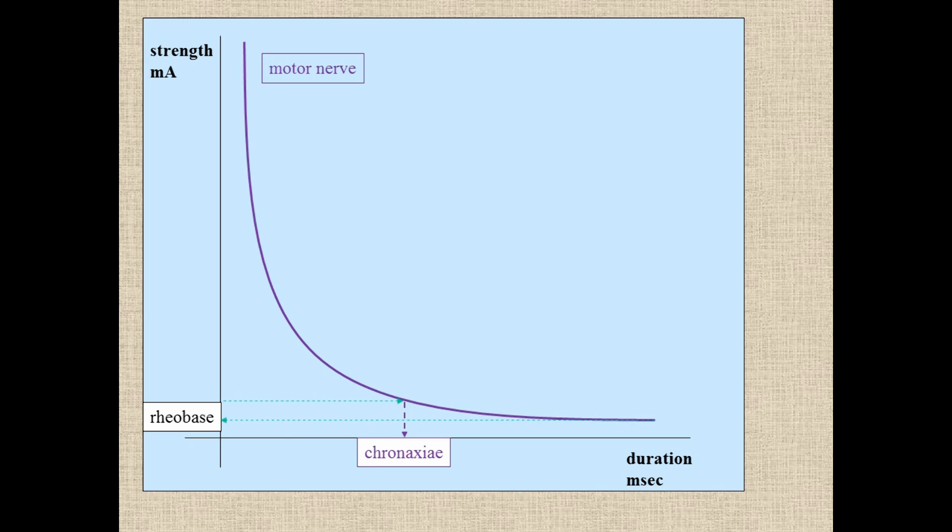So for any nerve system, the ideal place to be stimulating it at is at the chronaxie in terms of impulse duration. Which is why, in mammalian systems with motor nerves, it's about a tenth of a millisecond. I mean, the physiologists have known this for a long time and that's why when they design nerve stimulators, they set them up to work with an impulse duration of about 0.1 of a millisecond. So, in terms of Physiology 101, if you can reproduce that graph in an exam, you can explain how a nerve stimulator works.